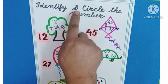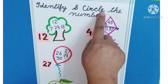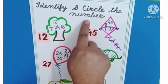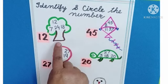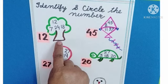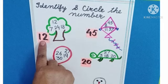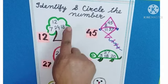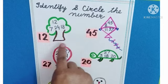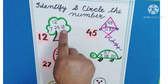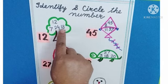Identify and circle the number. This is number 1 to 12. We have to search here. Where is number 12? Is it number 12?